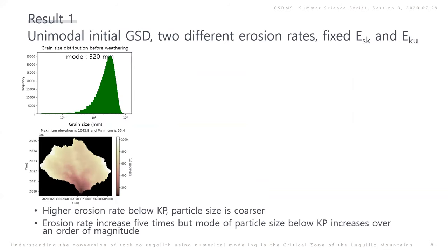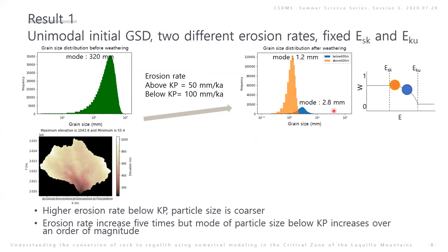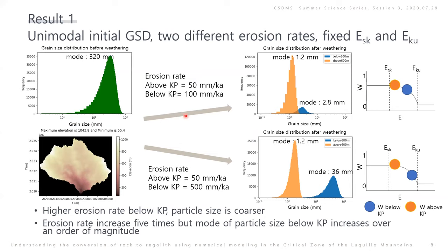Result 1 shows the impact of erosion rate. To test it, I defined an initial grain size distribution over the whole catchment and obtained these results. To test the impact of erosion rate, the erosion rate below the knickpoint was increased five times. The results show that particle size is coarser by around an order of magnitude.